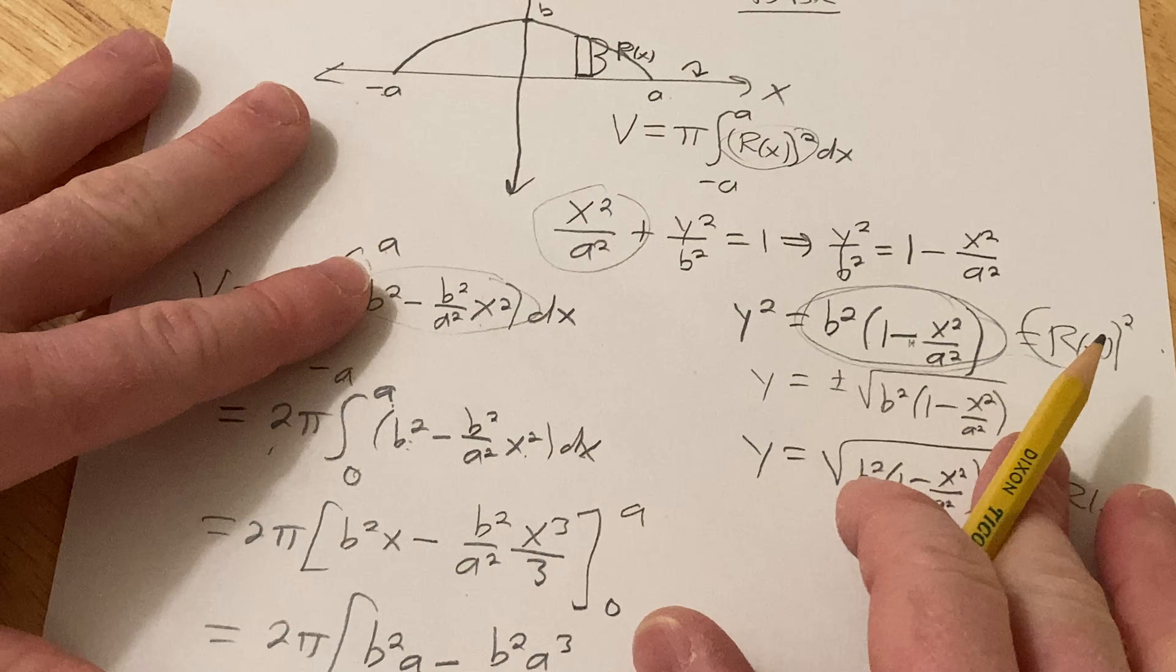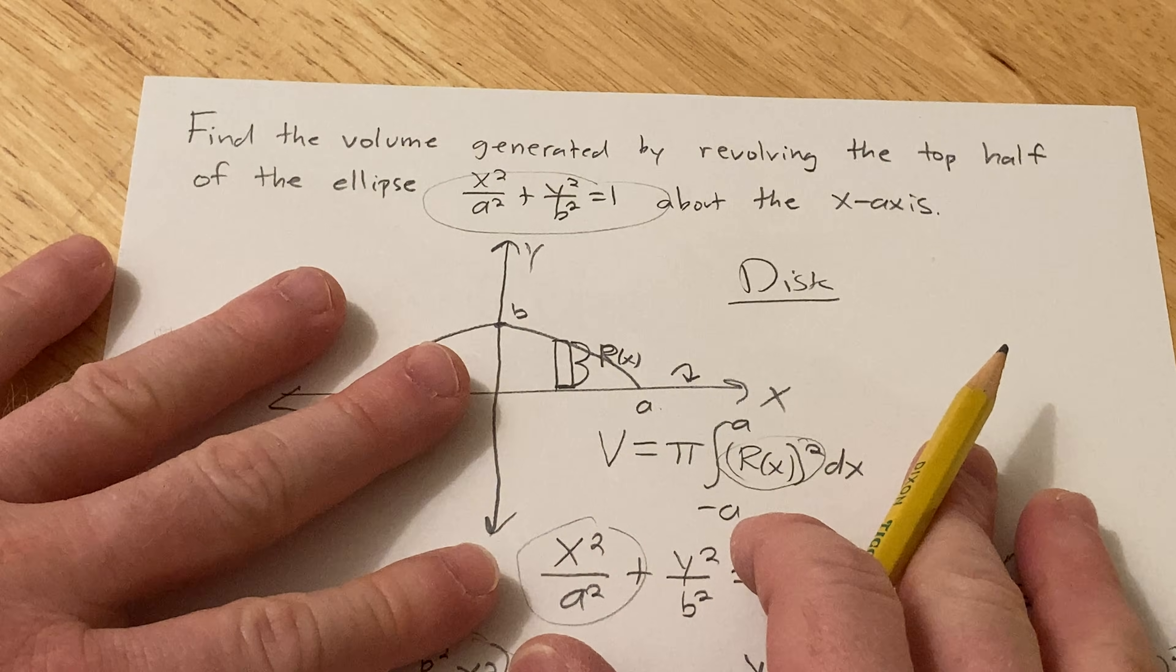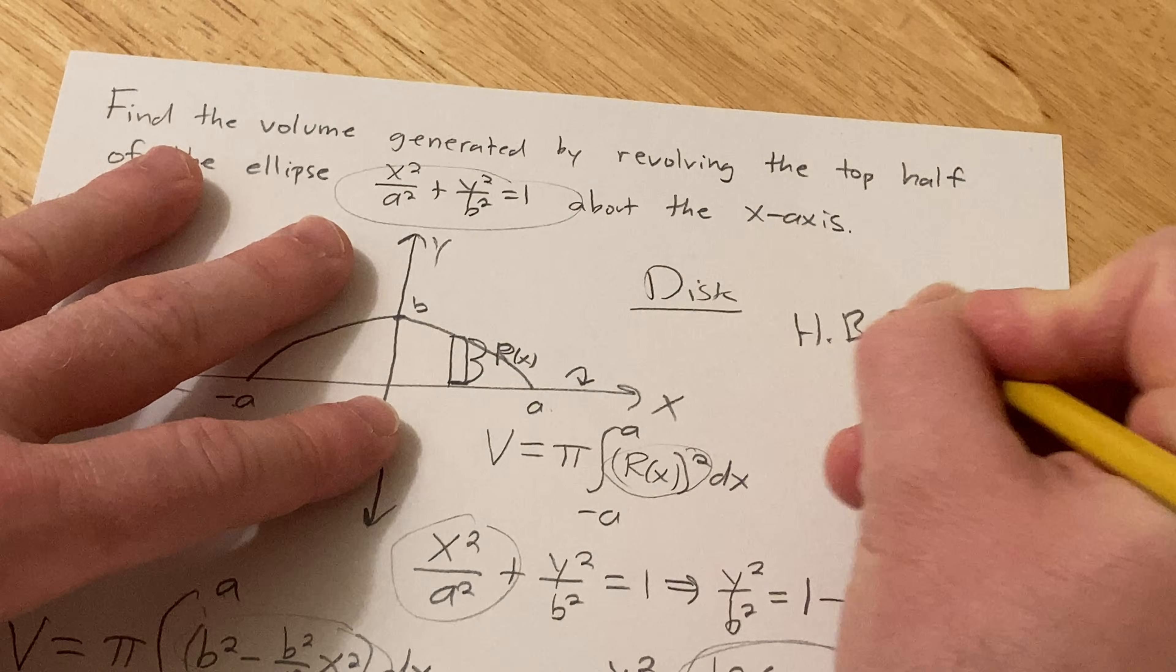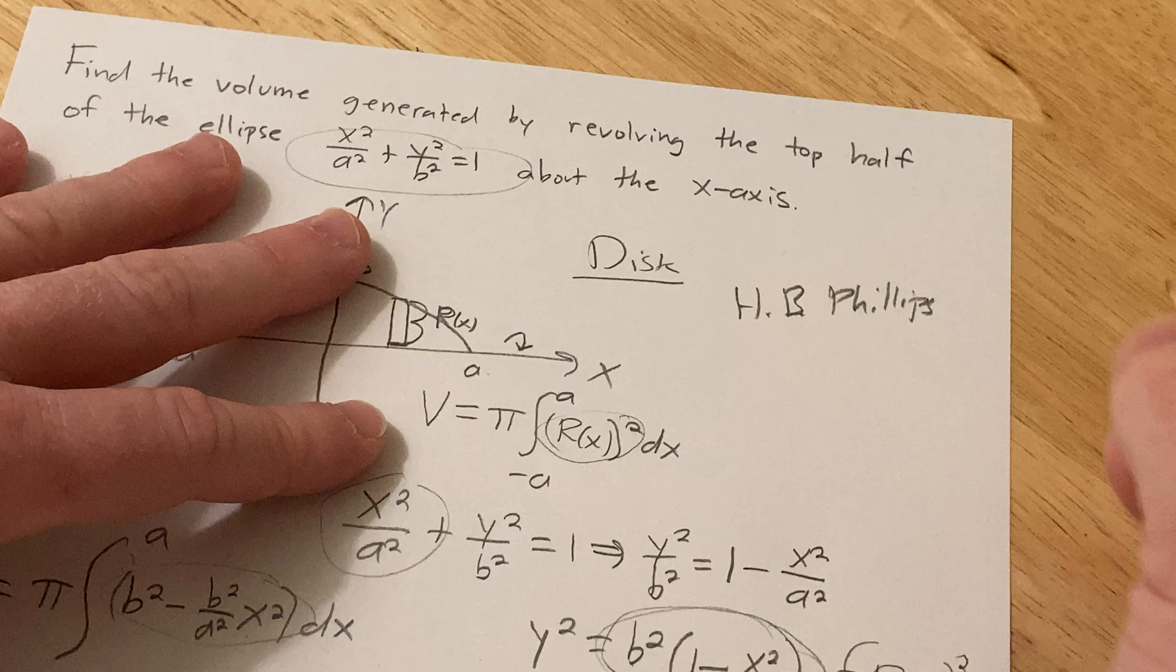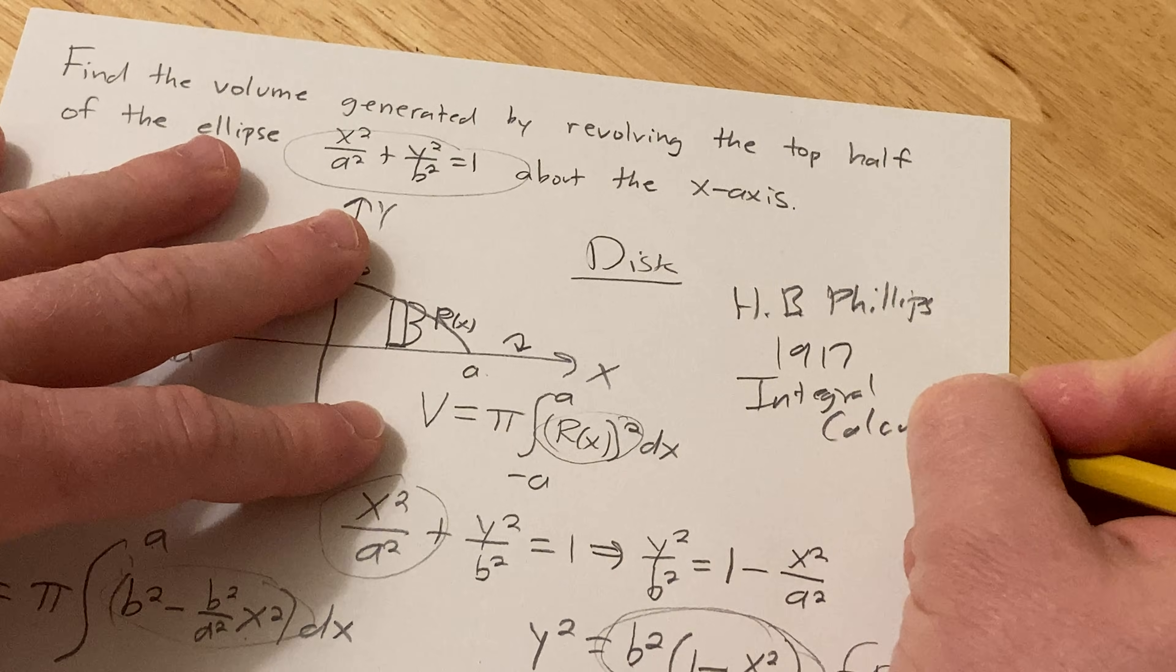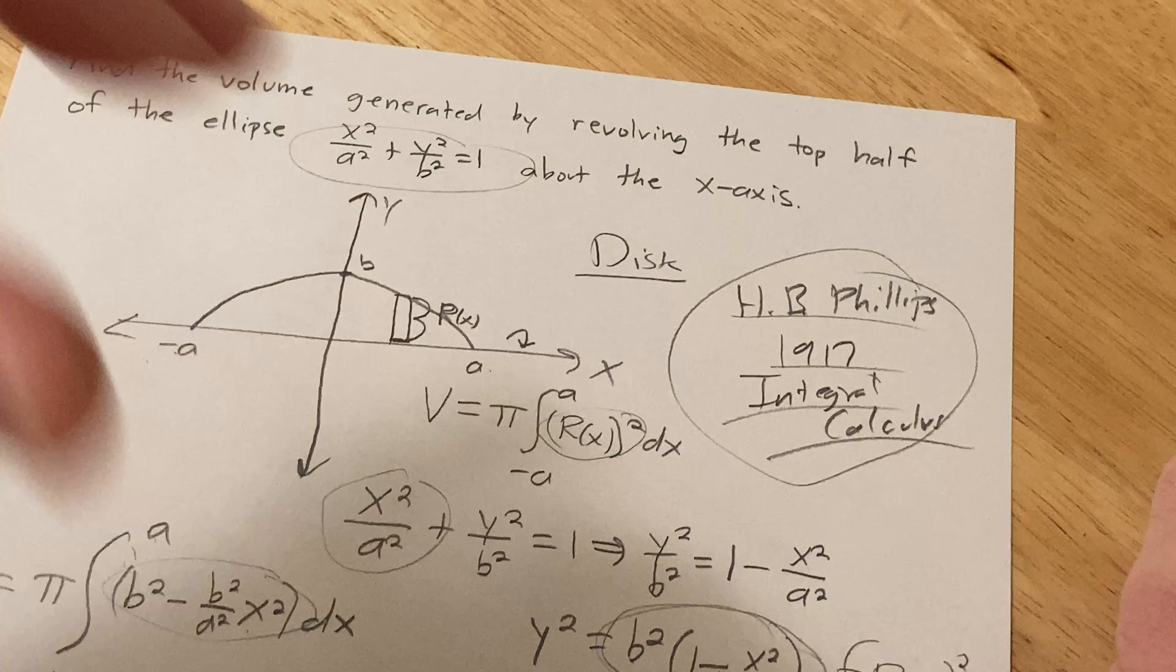So I went through that really quickly. I was just going to work it out. And I thought, let me just turn the camera on and work through it. This is from an old book. This is from a book by H.B. Phillips. And the book is from 1917 and it's called integral calculus and H.B. Phillips was an assistant professor at MIT. So really old school. Good luck.